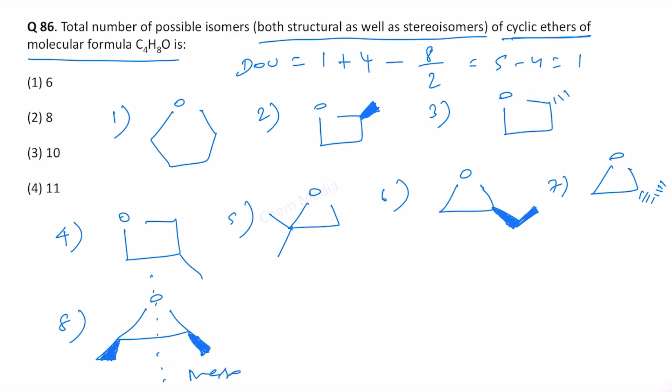Therefore, this is a meso compound. This means that we are going to have three stereoisomers instead of four stereoisomers. We have two chiral centers, but we are going to have three isomers because it is a meso compound.